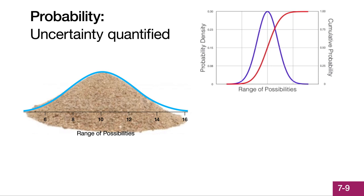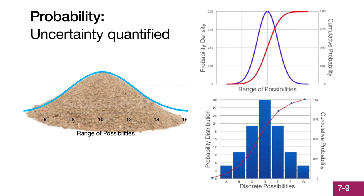The lower panel shows how probability is distributed for discrete possibilities, like diagnostic categories. If there is only one diagnosis — in other words, the possibilities are mutually exclusive — and if we are considering all of the possibilities, then the sum of the probabilities of all the possibilities will add up to one, as shown in red.